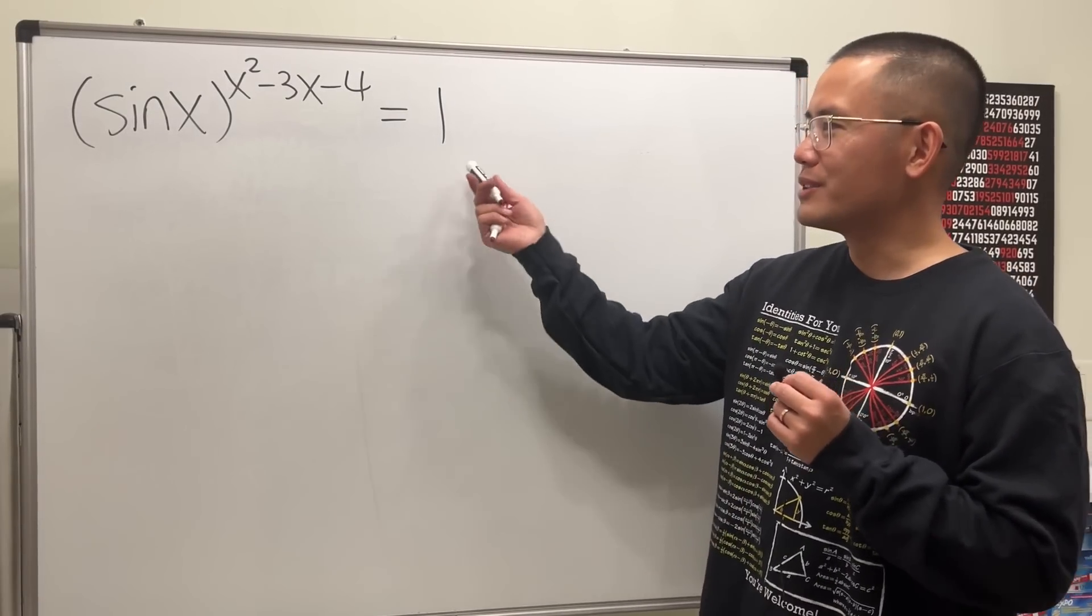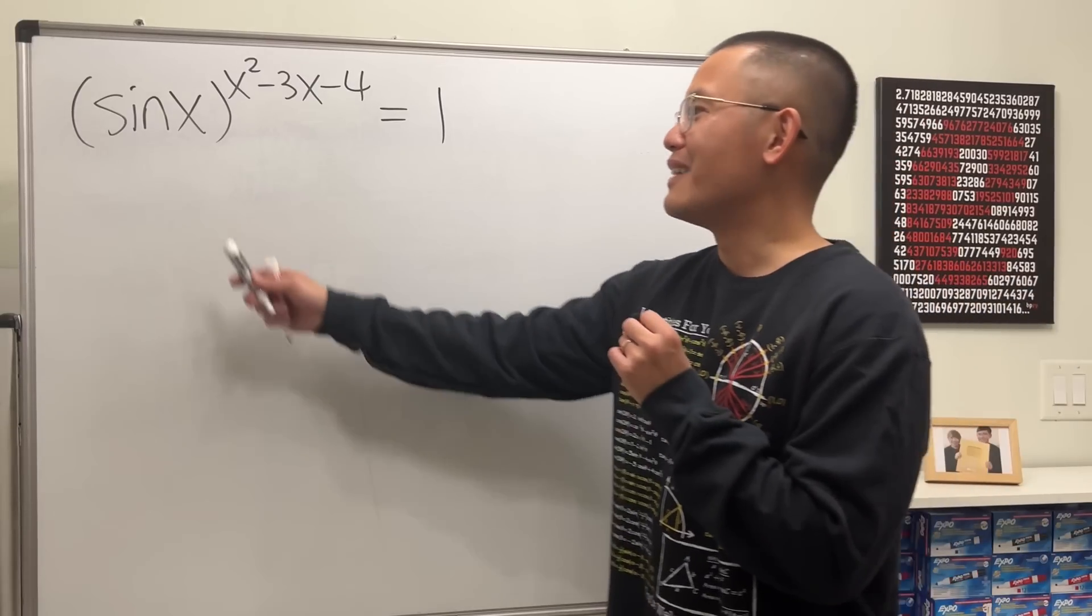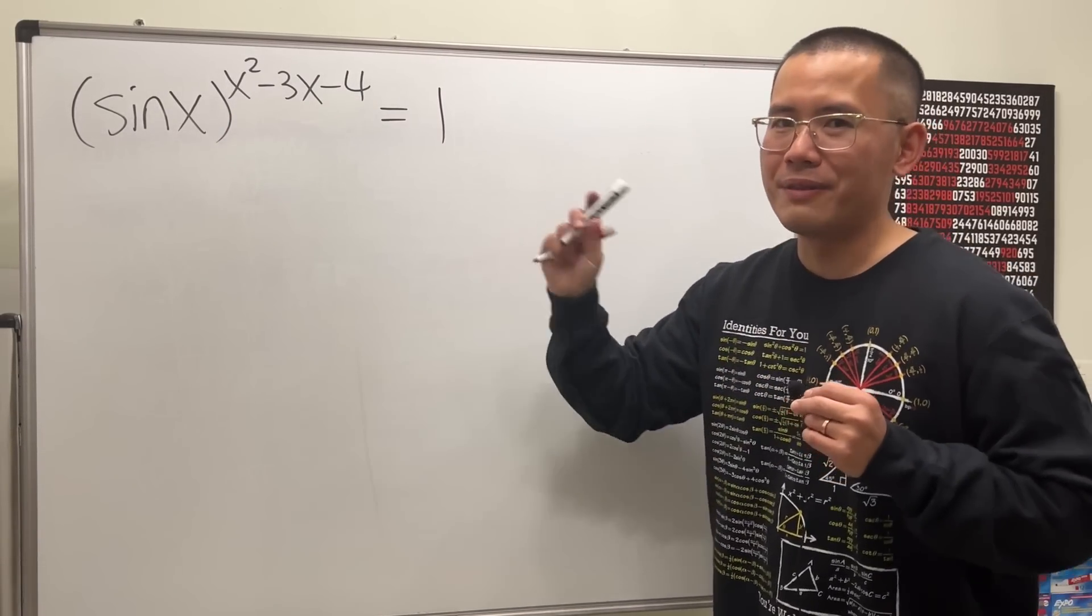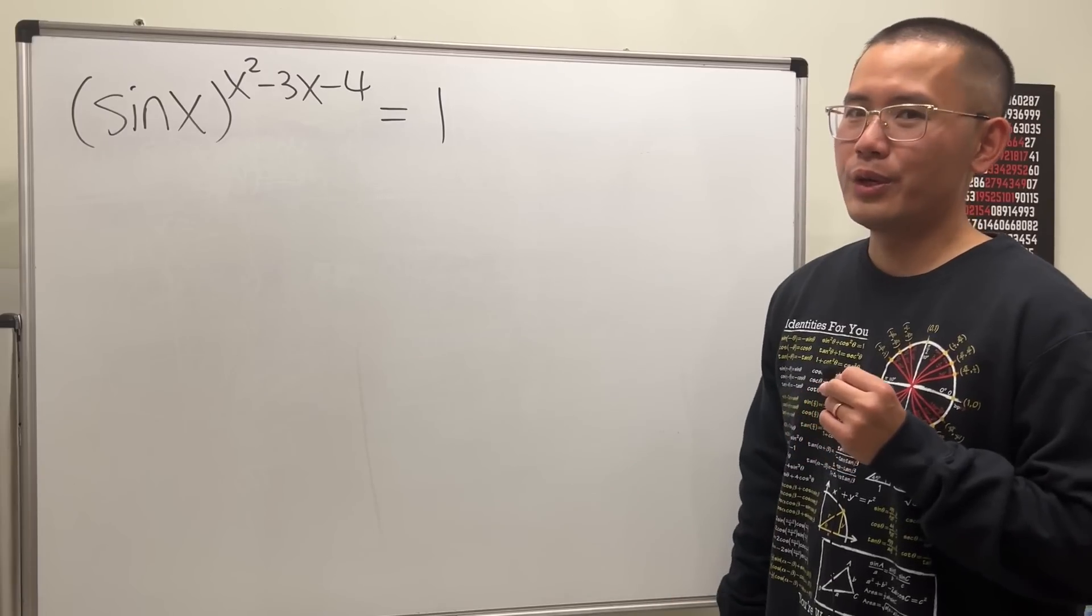Okay, I just want to talk about how to solve this equation with you. We have sin x to the power of x squared minus 3x minus 4 equals 1.